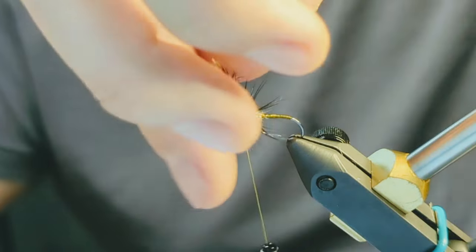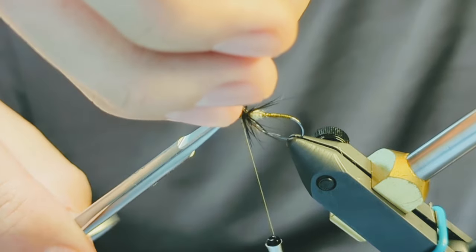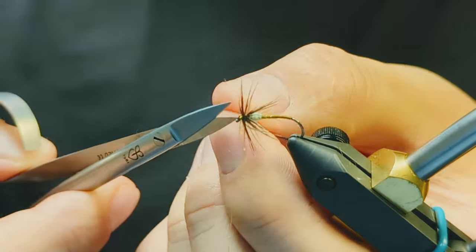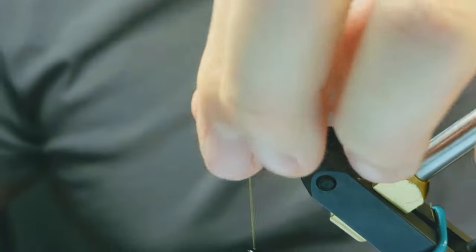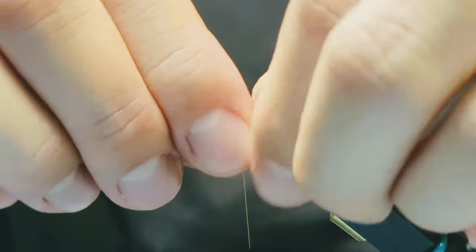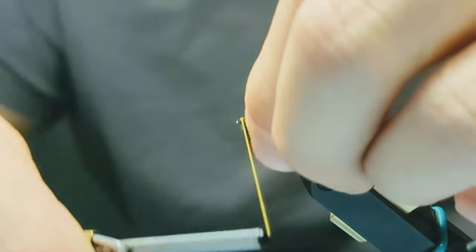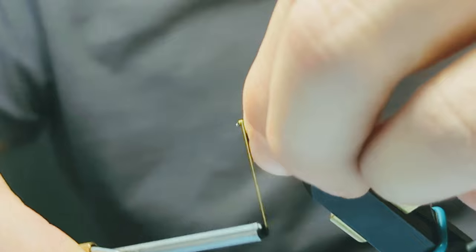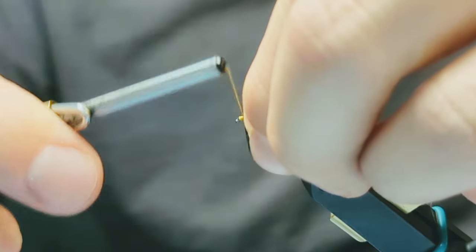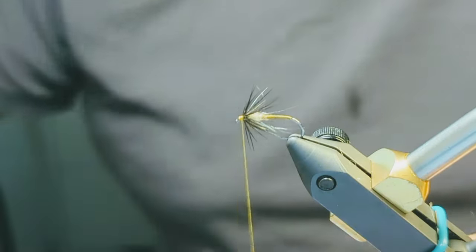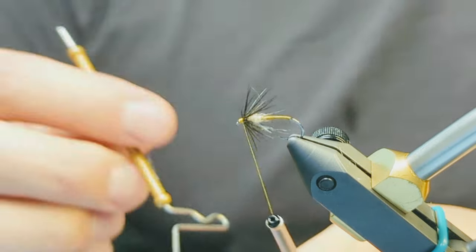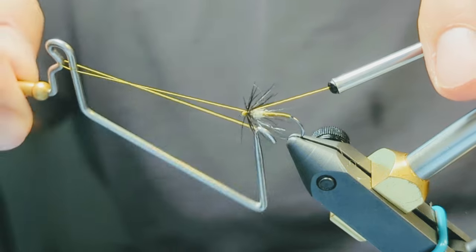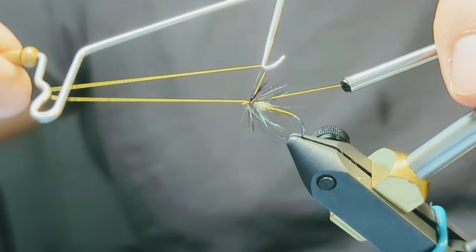Trim off the excess starling and take a few thread wraps to clean up and form a small head. End with a four or five turn whip finish and that's it. You can dab on a bit of head cement and pluck out any loose dubbing.